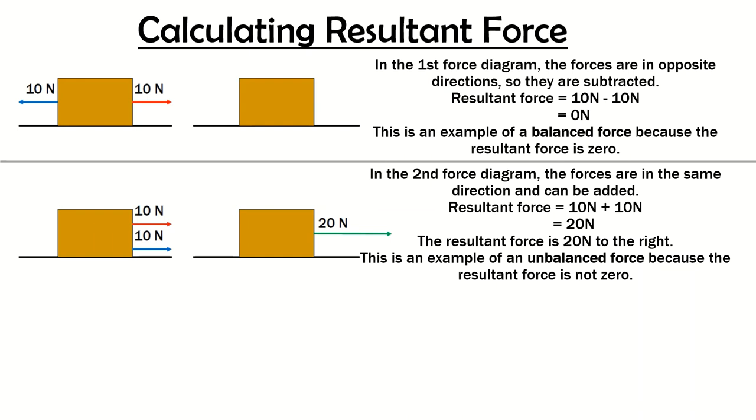And that force we must give a direction to, 20 newtons to the right. So this is an example of an unbalanced force because the resultant force is not zero. And because there is a force acting on this box, it will move, and it will move to the right.